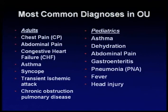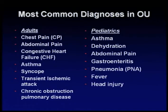The most common diagnoses in the observation unit for adults are chest pain, abdominal pain, congestive heart failure, asthma, syncope, transischemic attack, chronic obstruction, and pulmonary disease. For pediatrics, it's asthma, dehydration, abdominal pain, gastroenteritis, pneumonia, fever, and head injury.